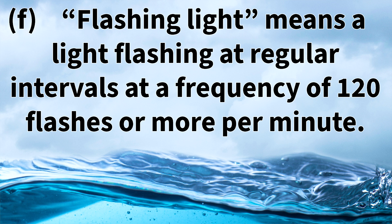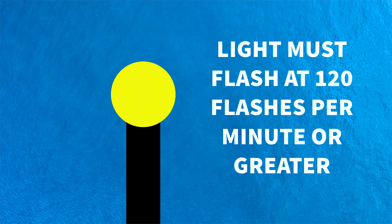Rule 21f states that a flashing light means a light flashing at regular intervals at a frequency of 120 flashes or more per minute. The important callout here is that it must be 120 flashes or more per minute. This is very important for the final exam — when I took it, there were questions where the definition given was not 120 flashes per minute. On a true/false question, 120, 130, or 150 flashes would be true, but 110 would be false. Remember: flashing light equals 120 flashes per minute or greater.